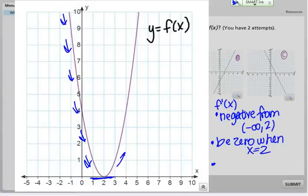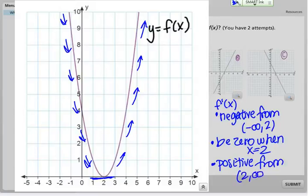Then what happens? My graph starts to increase and it continues to increase for the rest of the time. Whenever the original function is increasing, that means my derivative is positive on that interval. Then I know that the derivative should be positive from 2 to infinity.